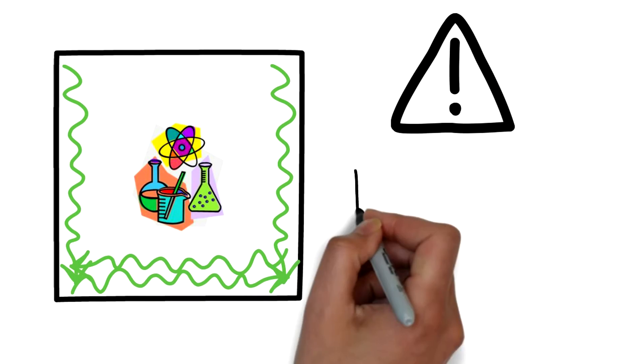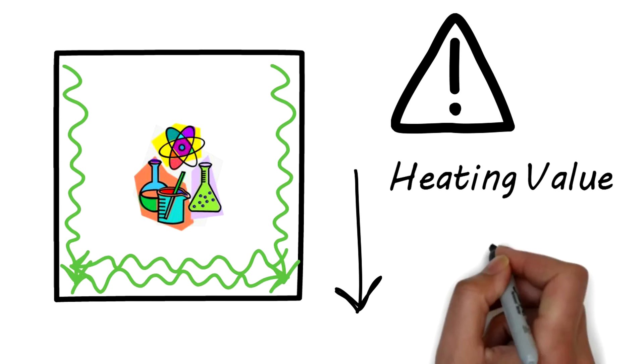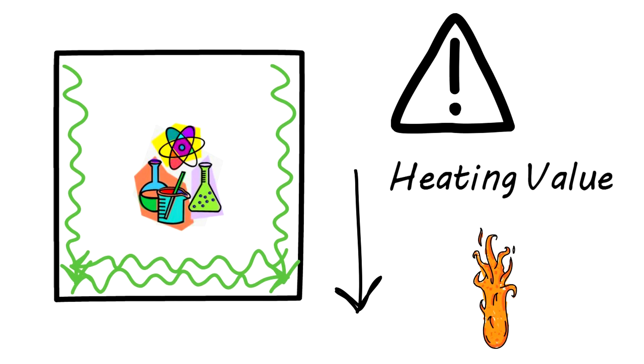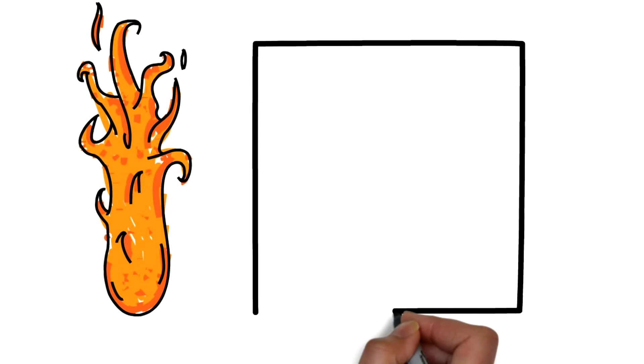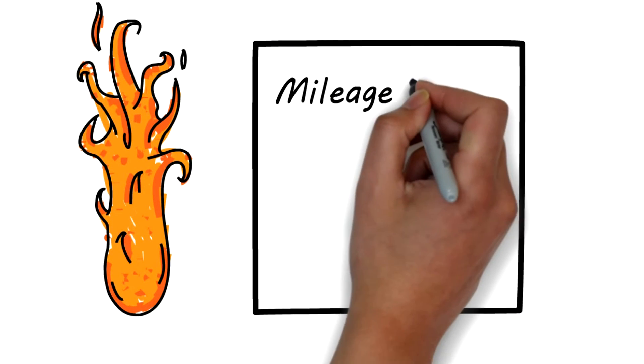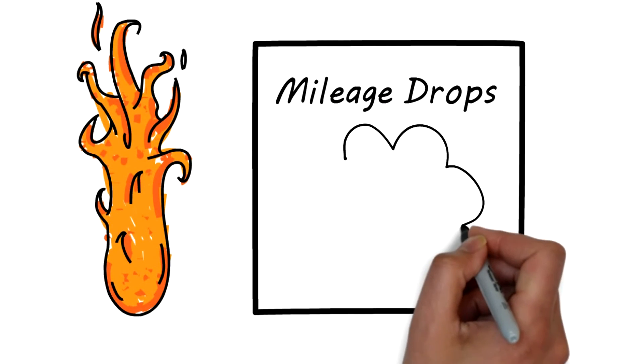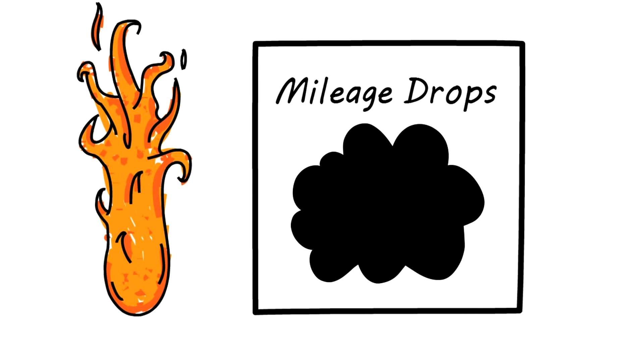This is a problem for users because sludge dropouts both reduce the heating value of the stored diesel fuel and, if it gets burned in the engine, causes deposit buildups in injectors and combustion chambers. Deposits like these are the biggest reasons why engine performance and mileage drops and the biggest reason why you might have black smoke when you fire up a generator.